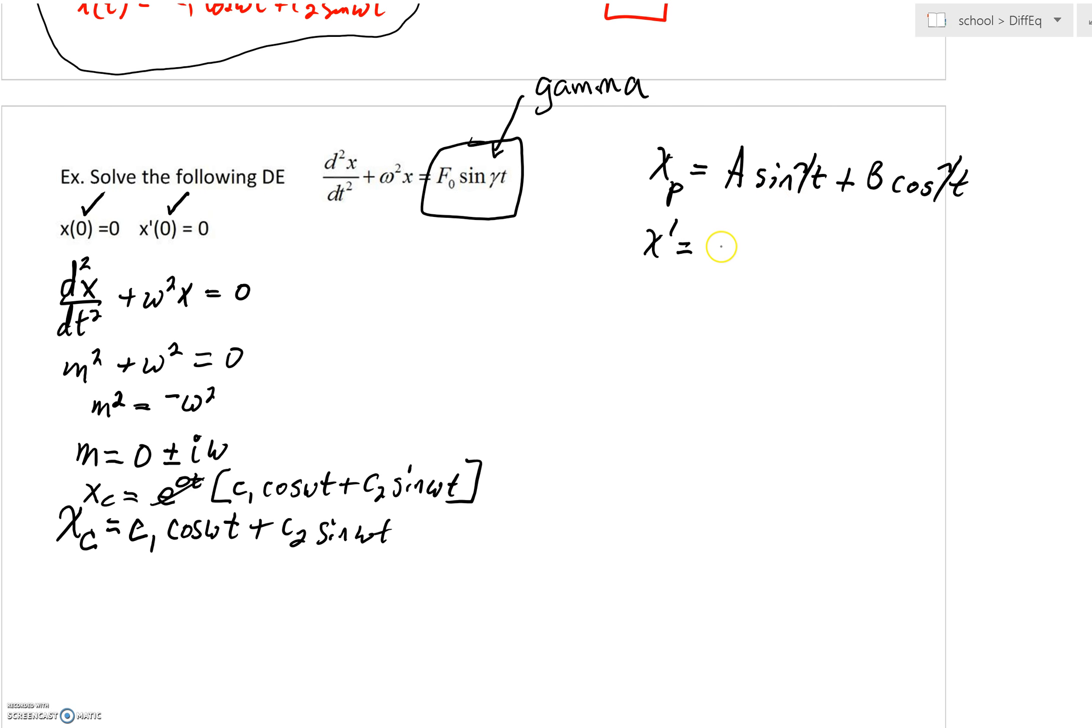Let's go ahead and take our first derivative here. The derivative of sine is cosine. But we're going to need the chain rule coming into play.